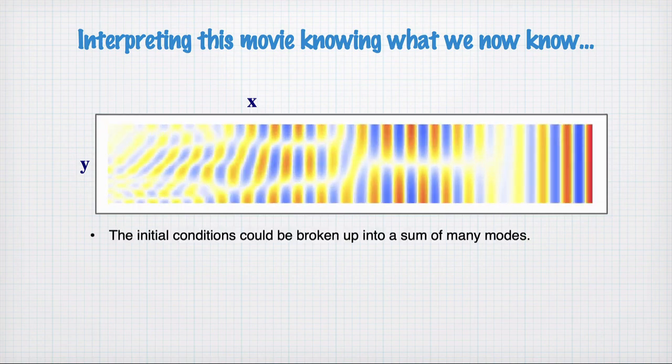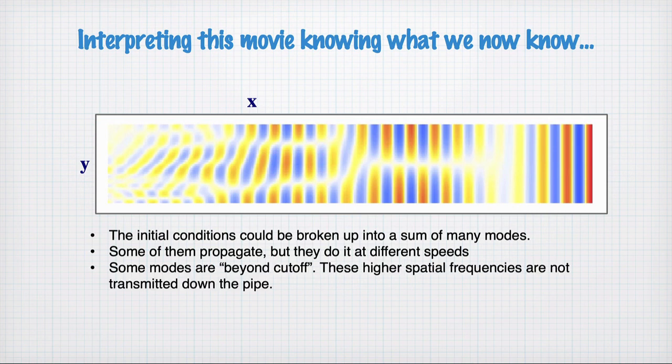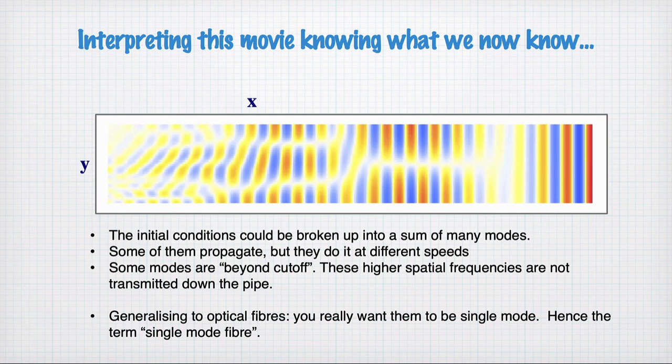In summary: initial conditions are broken up into a sum of many modes. Some propagate but at different speeds; some modes are beyond cutoff and these higher-order spatial frequencies are not transmitted — they are evanescent waves. This generalizes to other waveguides. For example, a single-mode optical fiber means that for a given frequency of light only one mode is allowed, which is desirable for optical communications to avoid complexity in signal arrival times.